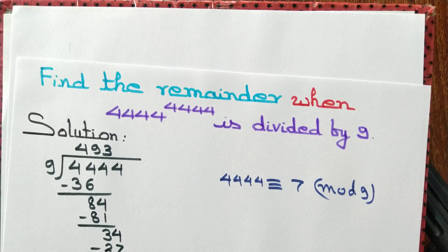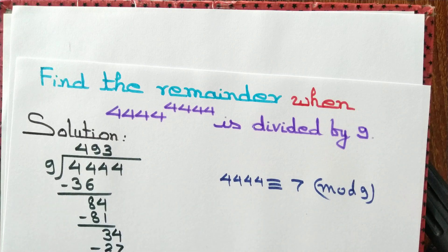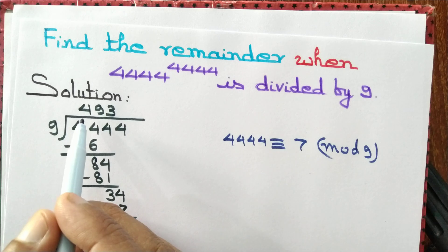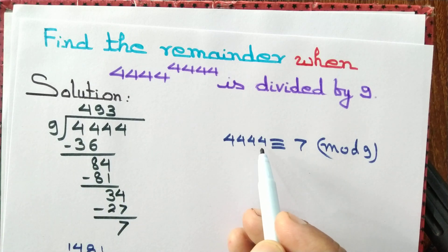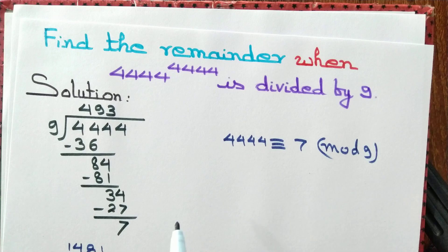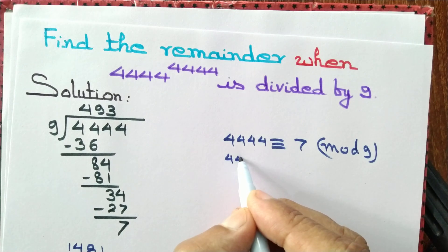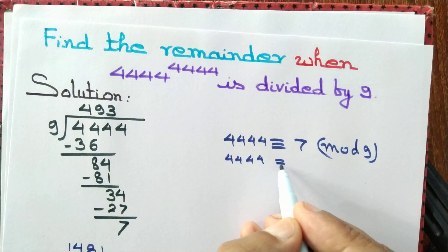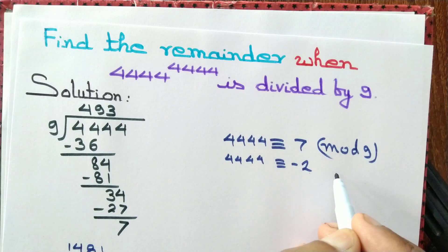So we divide 4444 by 9 to get the remainder equal to 7 and quotient equal to 493. So 4444 is congruent to 7 mod 9, or 4444 is congruent to minus 2 mod 9.